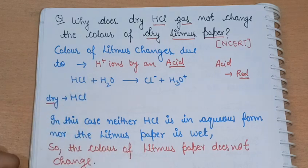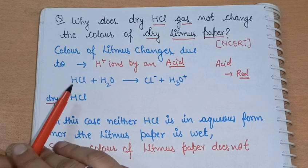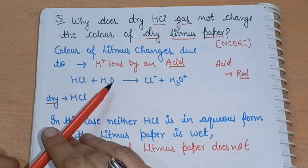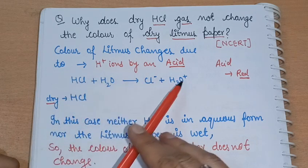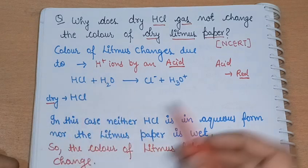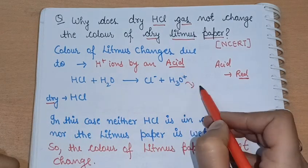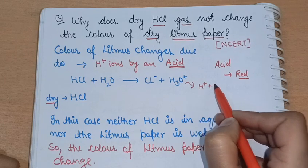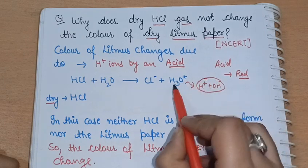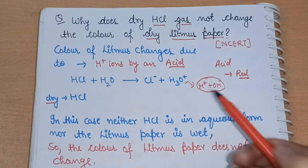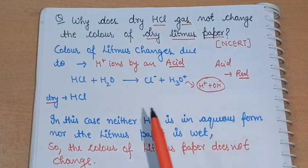If there is an aqueous solution — HCl in liquid form, HCl in water — it will dissociate into H⁺ ions and Cl⁻ ions. H⁺ ions are free form in that case.